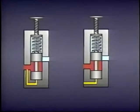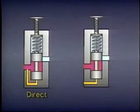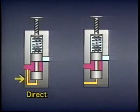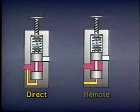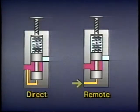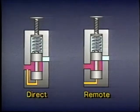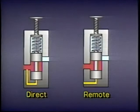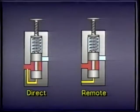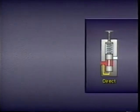Pressure changes are sensed in two ways: directly through an internal pilot passage in the valve itself, or remotely through a pilot passage that extends to some other part of the system. Some valves have both direct and remote pilot passages, which can change the state of the valve.